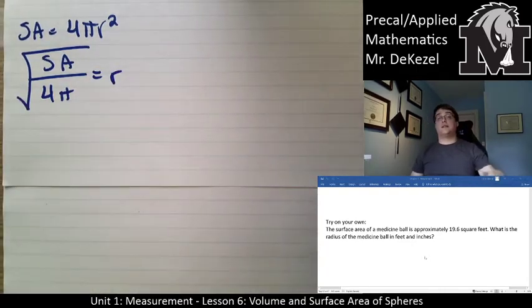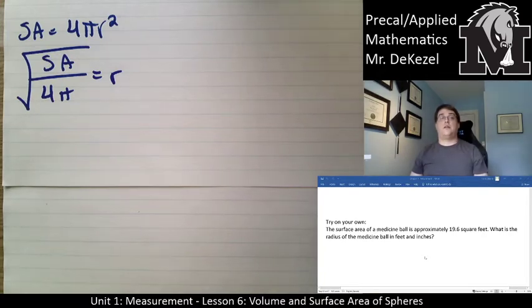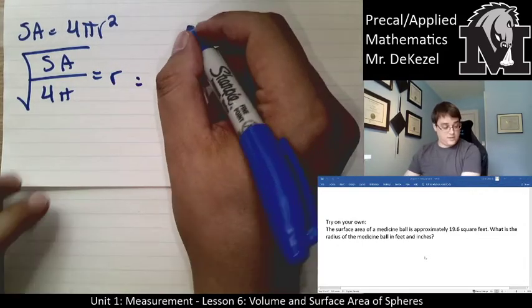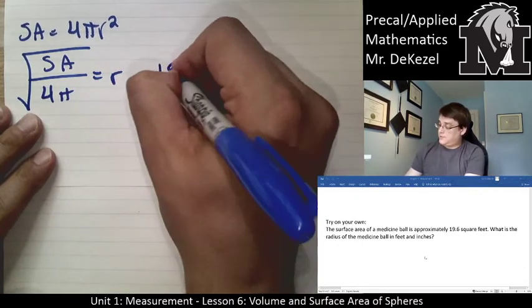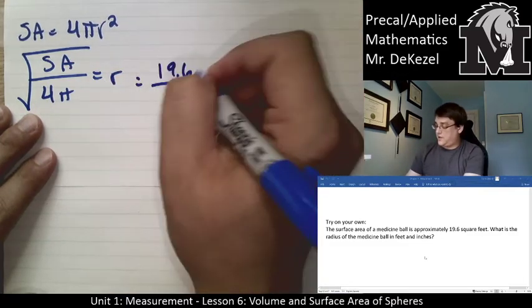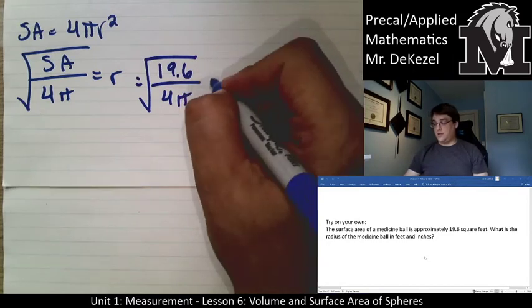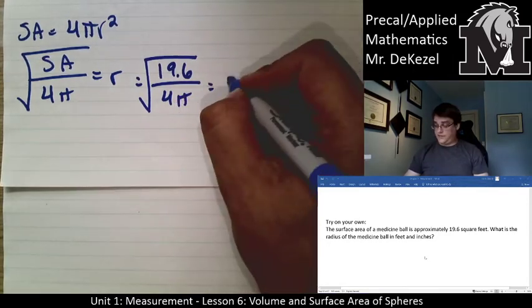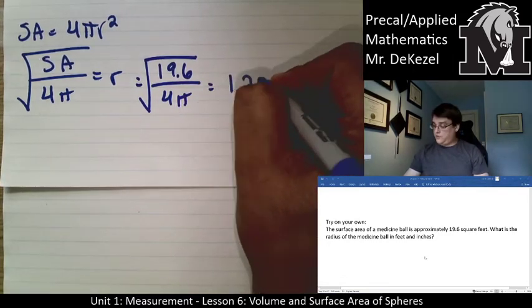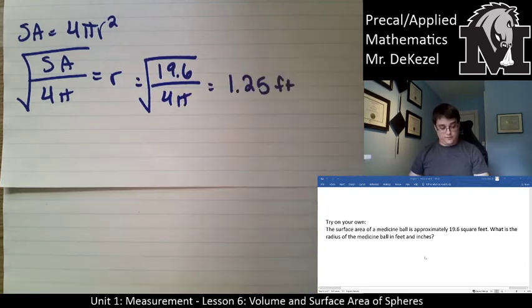We can rearrange the same way as last time. Surface area divided by 4π all square rooted gets us r. So go back to the last question if you're unsure of how to rearrange that, essentially dividing by 4π on each side and then square rooting. To plug in those numbers, 19.6 for surface area and 4π on the bottom, all square rooted, gives us a value of 1.25 feet for a radius.